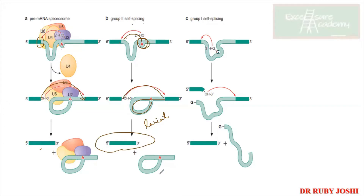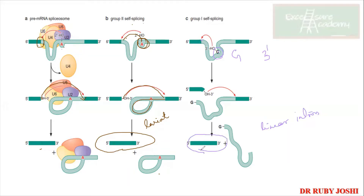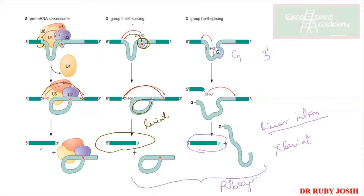In Group II, the 3'-OH attacks the phosphate group, the two exons are joined, and the lariat is removed. In Group I, instead of A you have G, and instead of 2'-OH you have 3'-OH. The G gets inserted, and the intron is removed as a linear intron — not a lariat. Ultimately the exons are joined. Both Group I and Group II self-splicing are examples of ribozymes.